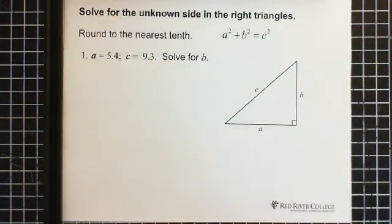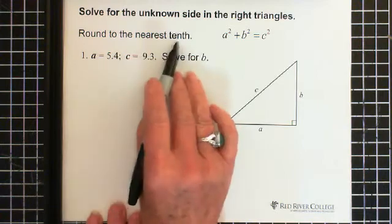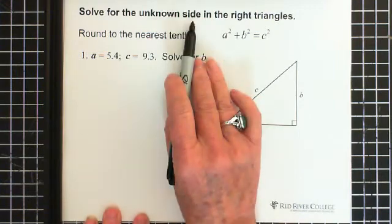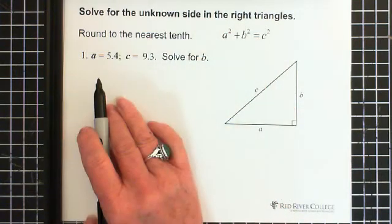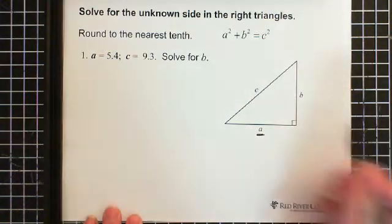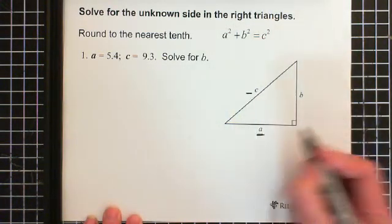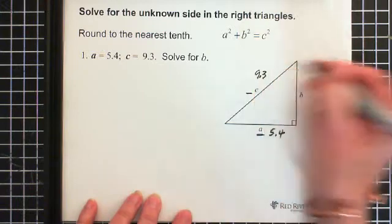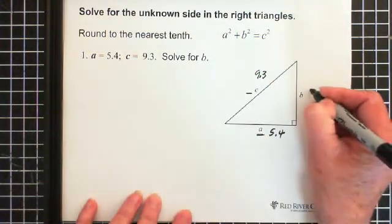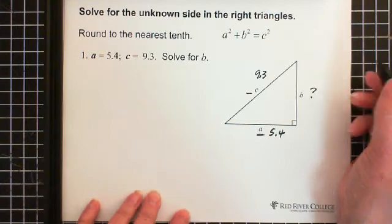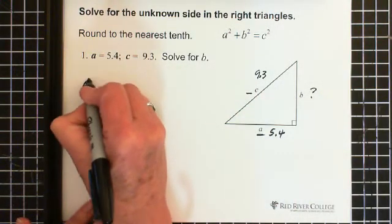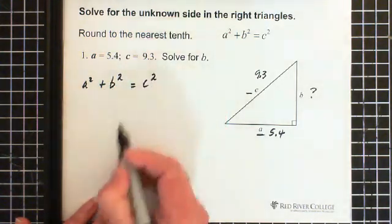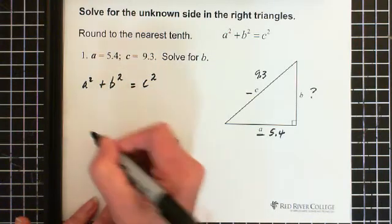Now here's another question, and it's asking that the answer be rounded to the nearest tenth. So what we're doing is solving for the unknown side in the right triangle. We know side A, and we know side C. Side A is 5.4, side C is 9.3. And what we're solving for is B, so this is the piece we don't know. So then we start with the Pythagorean theorem, A squared plus B squared equals C squared. And we're solving for B, so we have to isolate B.